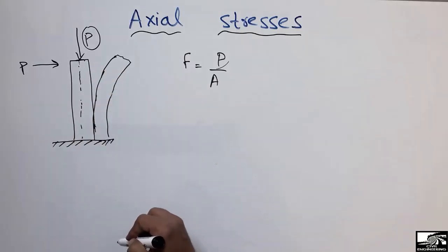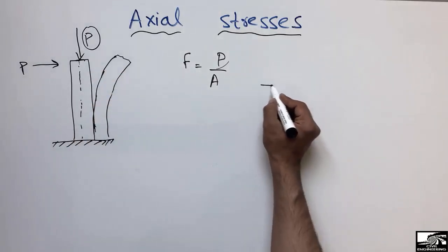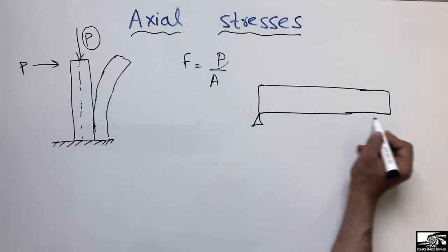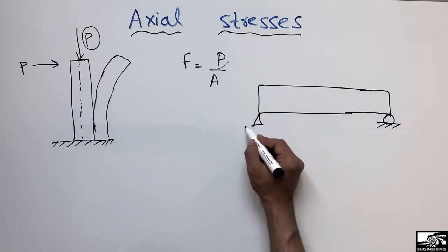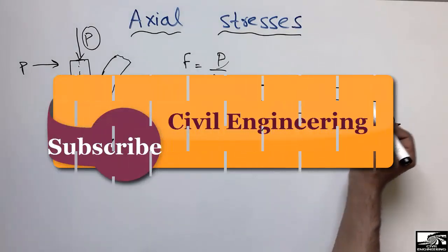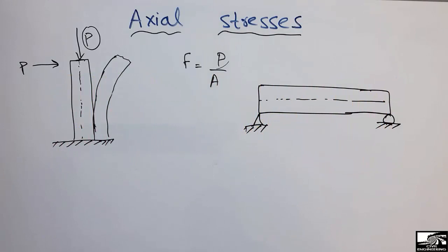Sometimes if we consider a beam, let's suppose this is a simply supported beam. This is the axis of the beam. Mostly the beam is a flexural member and they're subjected to bending stresses.